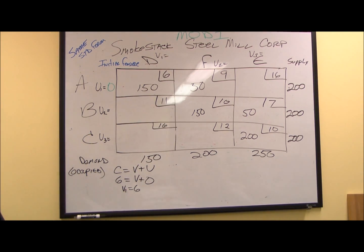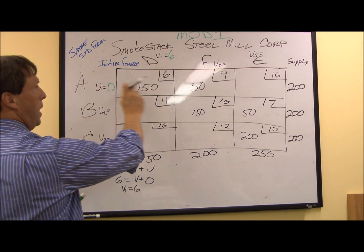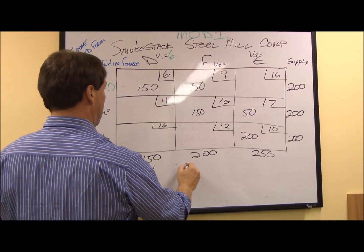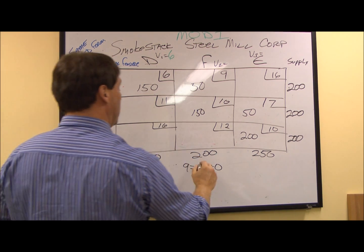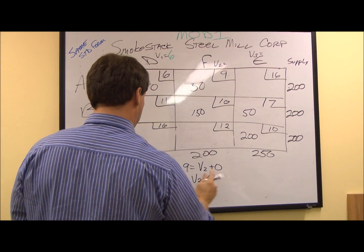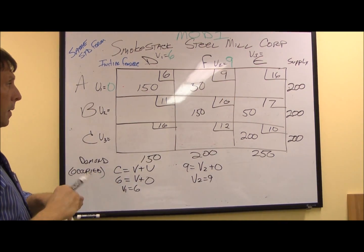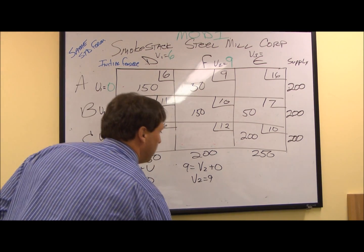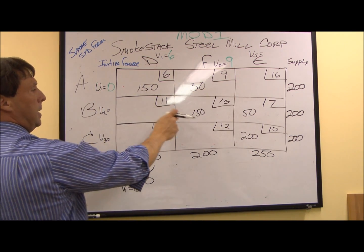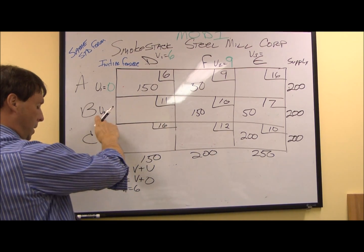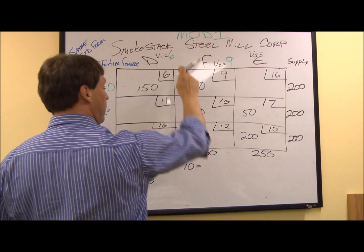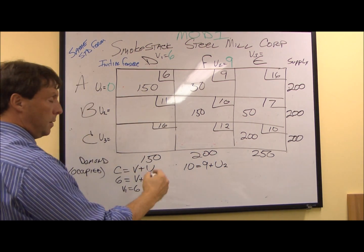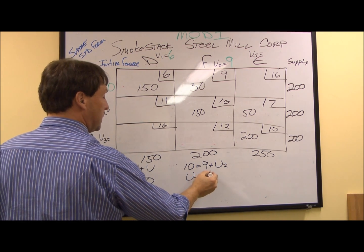So I'll write in six. Next, moving on to Anaheim to Fort Worth. We know that our shipping cost is nine and our index for U1 is zero, so V2 equals nine. We have an unoccupied cell next, so our next occupied cell is Birmingham to Fort Worth. We know our per unit ship-to cost is ten. We have V2 equals nine, but we don't know U2. Solving for U2, we have U2 equals ten minus nine, or one.